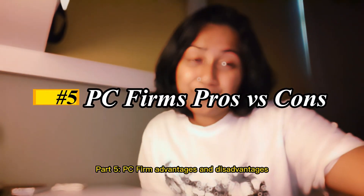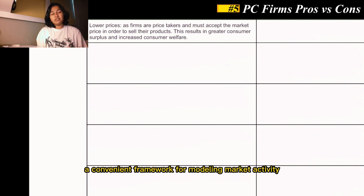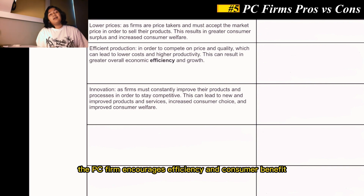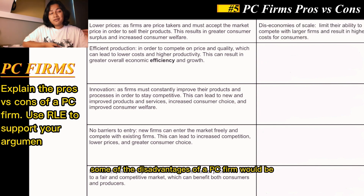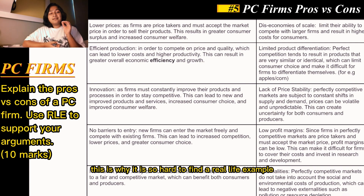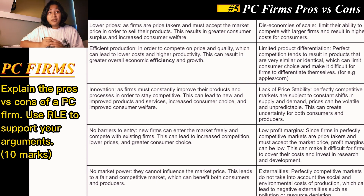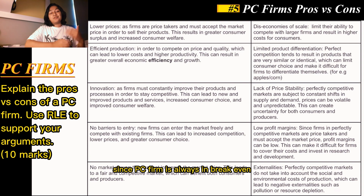Part 5: PC firm advantages and disadvantages. Some of the advantages of a PC firm are that it provides a convenient framework for modeling market activity — no wonder economists love the PC diagram so much. It helps allocate resources to their most efficient use. The PC firm encourages efficiency and consumer benefit because consumers are charged a lower price, and it is responsive to consumers' wishes. Some disadvantages are that the perfect competition model does not always reflect real-world market conditions — this is why it is so hard to find a real-life example, as it is almost impossible to achieve. The model does not account for geographical differences or product variations, does not account for how producers benefit from economies of scale, and there are always insufficient profits for investment since the PC firm is always at break even. There is also a lack of product variety and unequal distribution of goods and income.